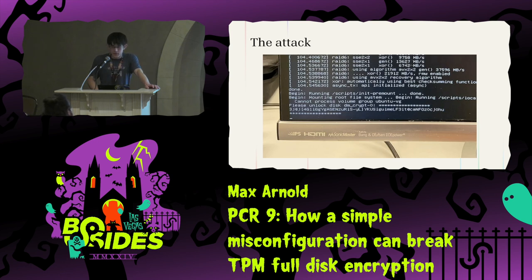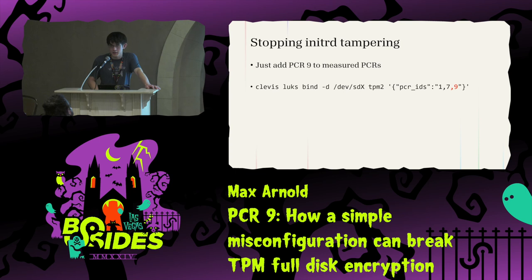This is a weirdly simple attack — you're taking a glorified zip file, adding a few print statements, then putting it back together. It may as well be a debugging command. And it has a similarly simple fix: all you need to do is make sure you actually measure PCR9. In that earlier command, just add PCR9. If you're using cryptenroll, it's the same thing. This completely stops the attack. I wish more people said this, which is why I'm here — online there are so many tutorials that don't talk about how important it is to select the specific PCRs you're actually using.